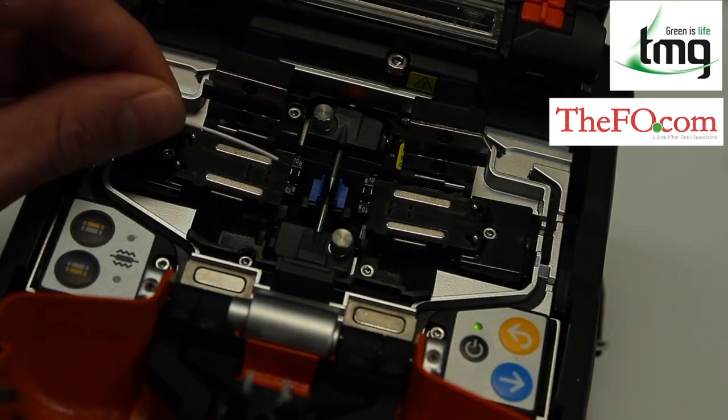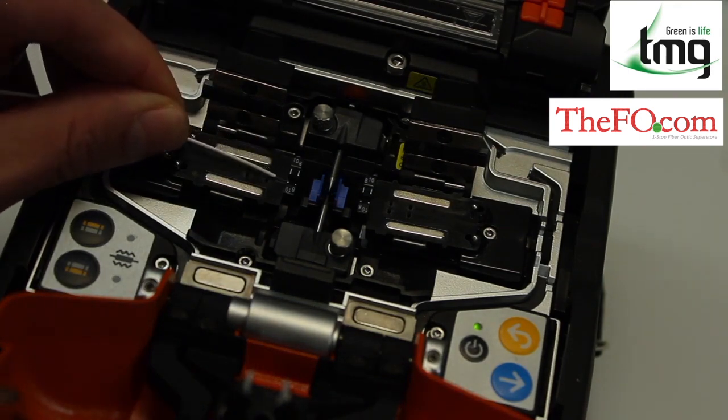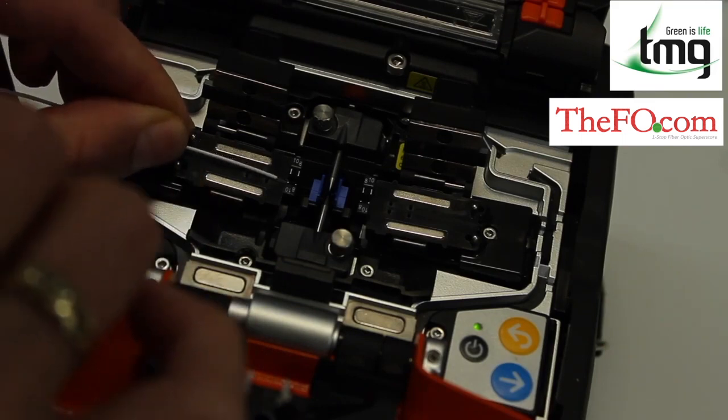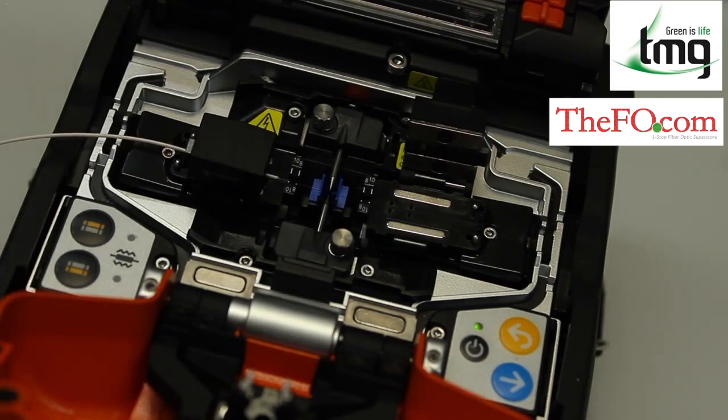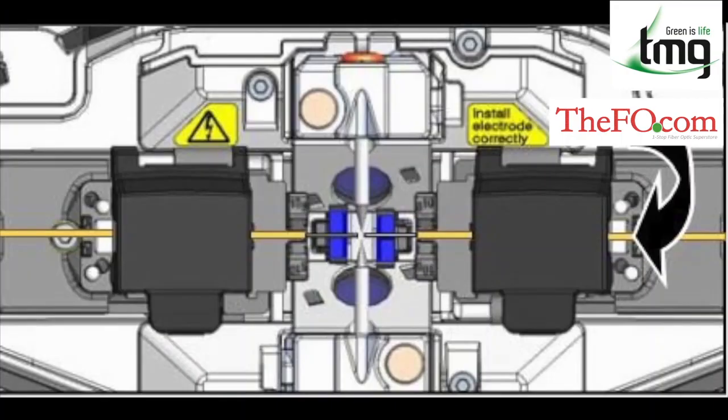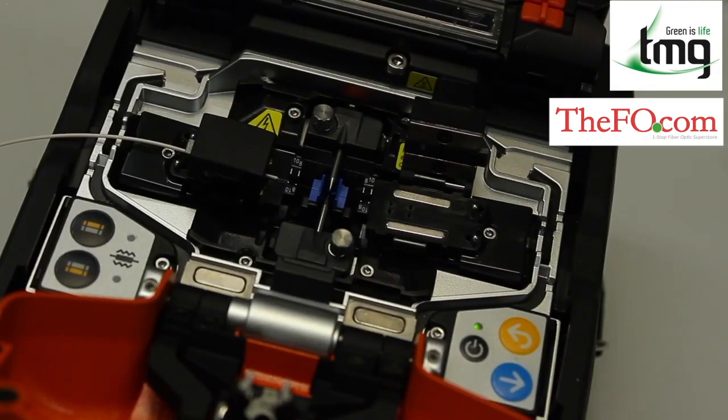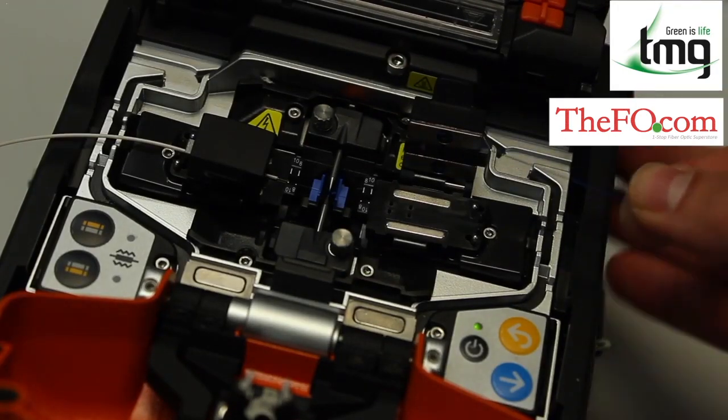Now with the splicer lid open, you carefully drop the fiber into the V-groove. Try not to let it touch anything in the process as this could contaminate the fiber. The fiber end should be directly between the two electrodes. Once in place, drop the clamp to secure the fiber. Now do the same with the second fiber you prepared earlier.